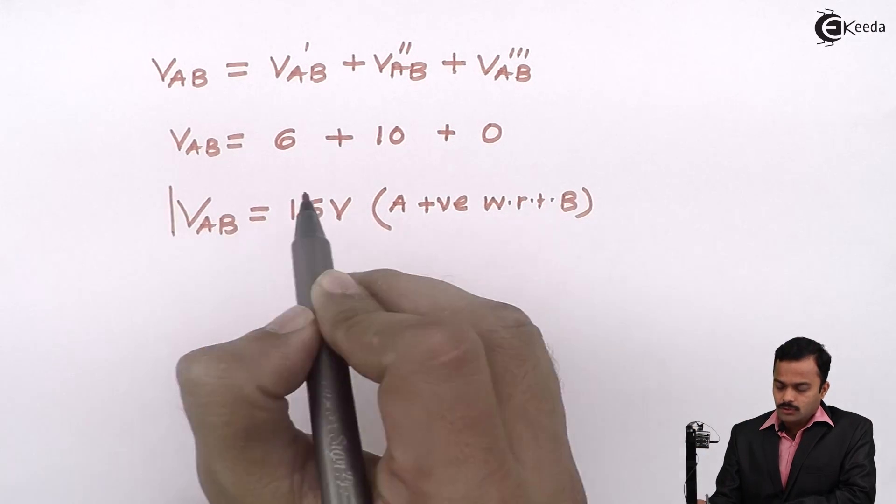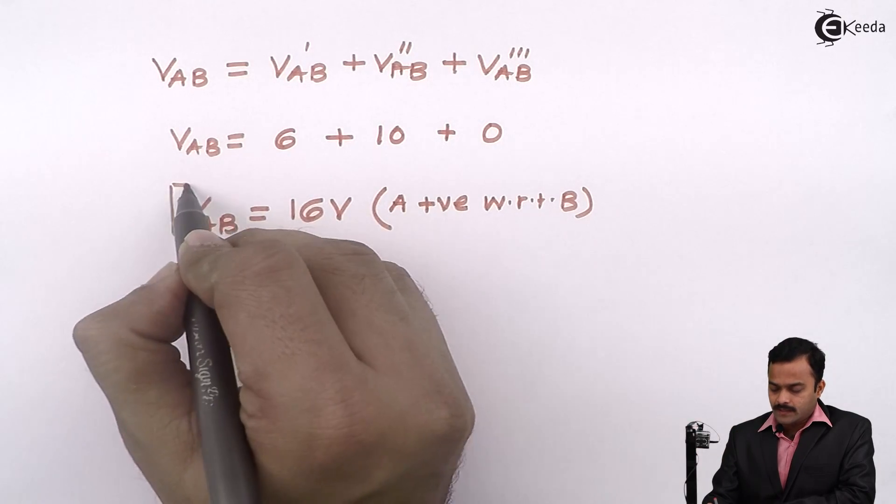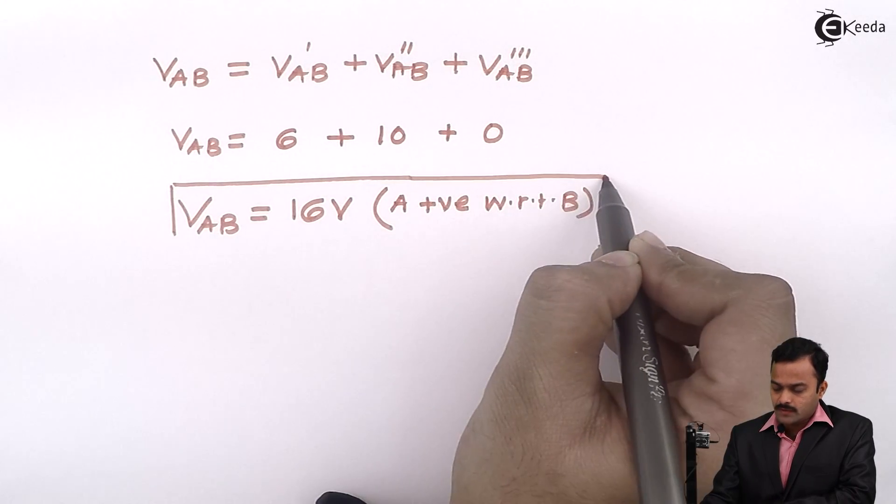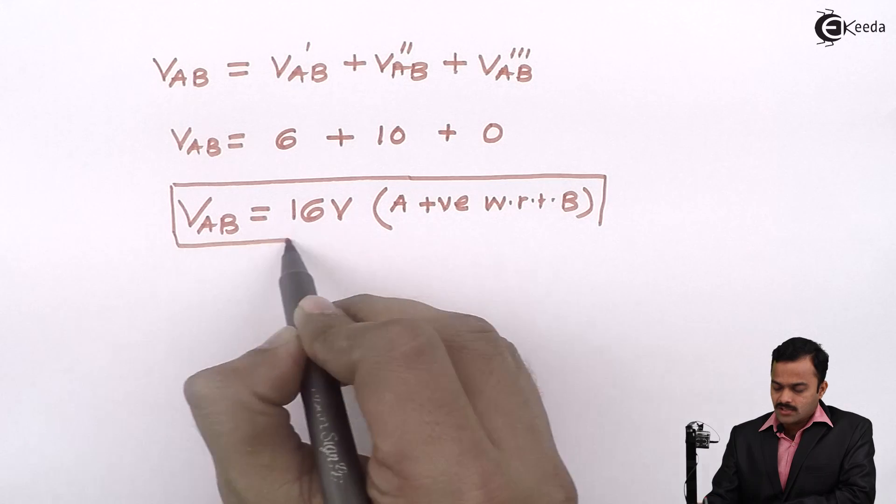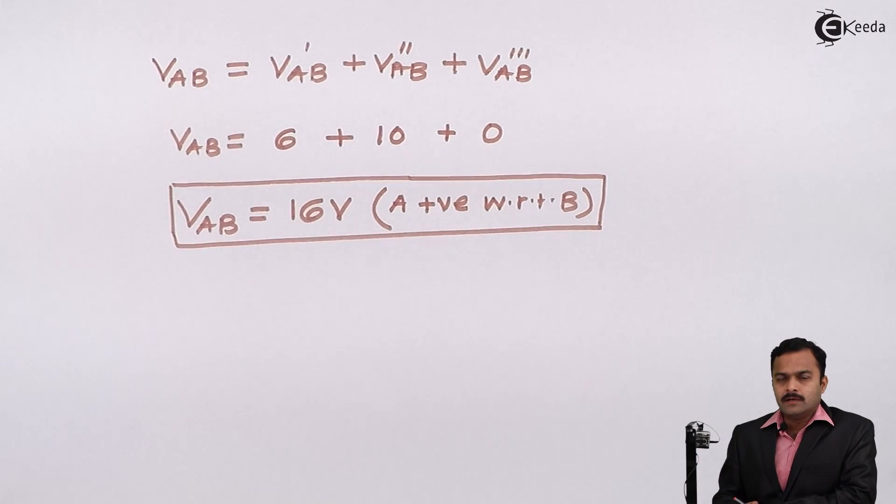So whenever voltage is asked, you better write down this statement which point is positive with respect to which point. And in case of a current as a response, we will denote direction along with the magnitude. So here we have seen a numerical having three sources present and only one resistance. But actually the answers are very simple. It will be just simple concepts that we have already learned. In subsequent videos, we will solve more numericals based on superposition theorem. Thank you.